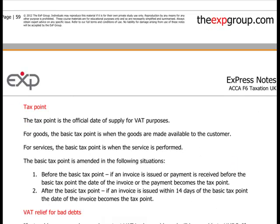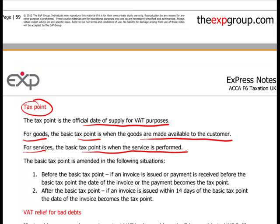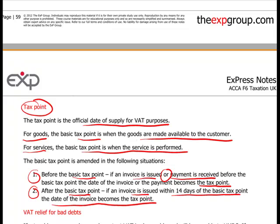Importantly for the F6 paper: the tax point. The tax point is the official date of supply for VAT purposes, usually taken to be when the invoice is made, but there are alternatives. For goods, the basic tax point is when the goods are made available to the customer. For services, the basic tax point is when the service is performed. The basic tax point is amended in the following situations: before the basic tax point, if an invoice is issued or payment is received, then this becomes the tax point. If after the basic tax point an invoice is issued within 14 days, the date of the invoice becomes the tax point.